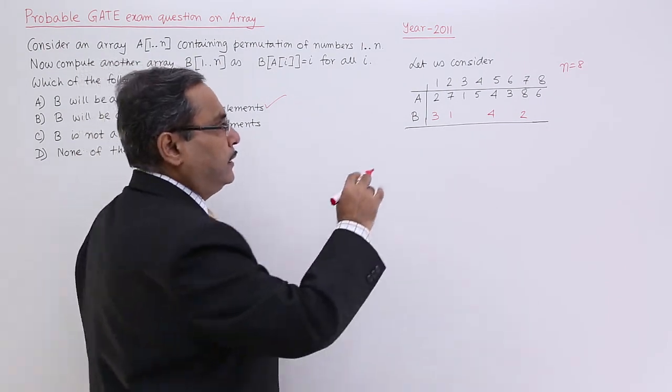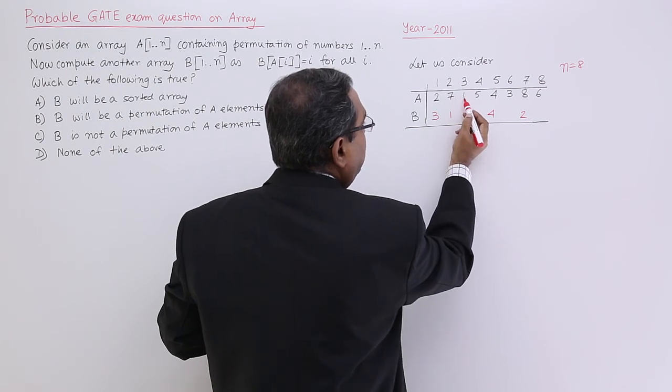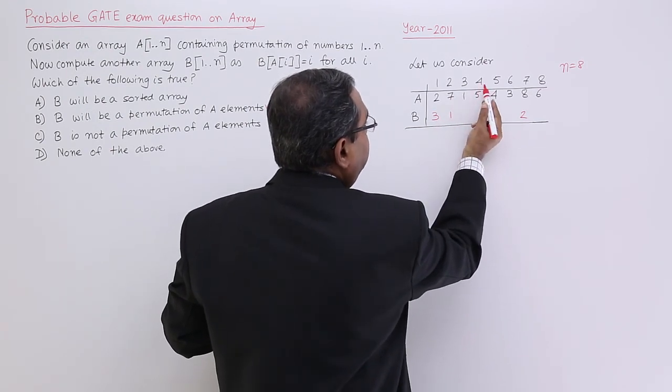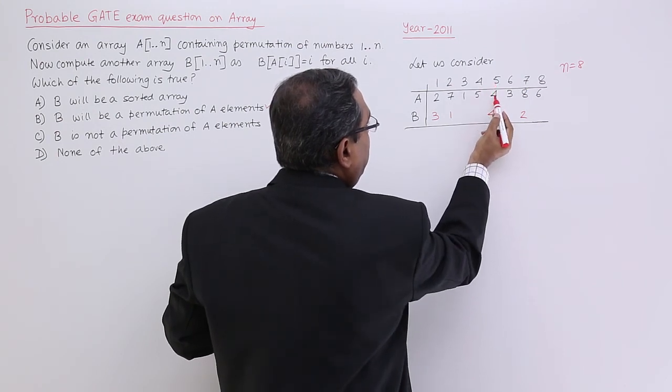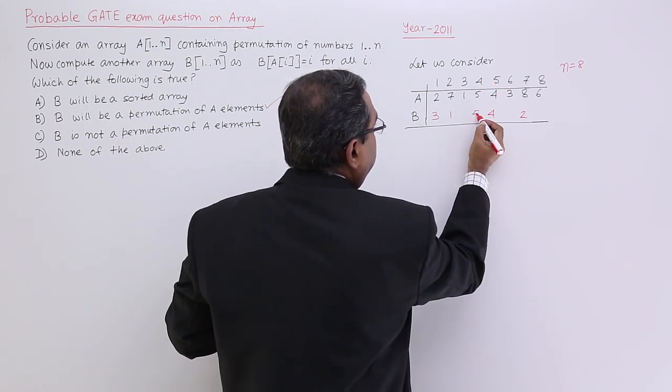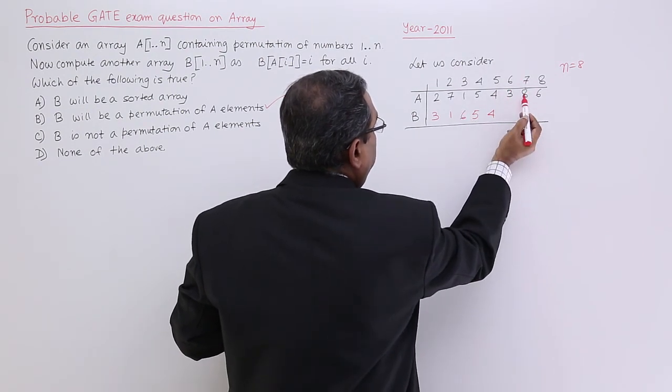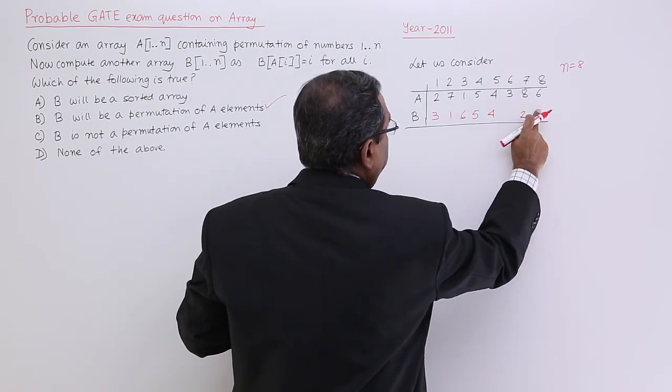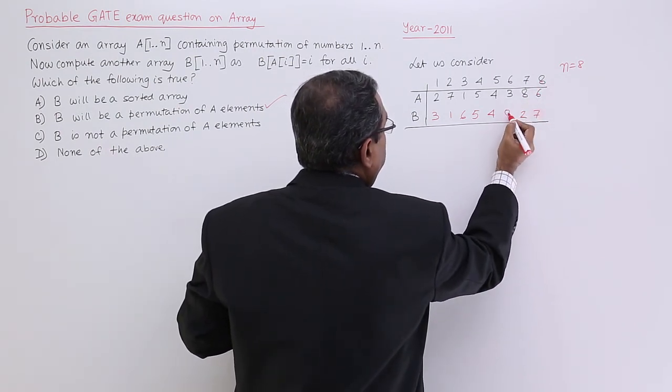Let us complete the fill up. 3 will be placed at the first, I have done. 4 will be placed at the fifth location, I have done. 5 will be placed at the fourth location. 6 will be placed at the third location. 7 will be placed at the eighth location. 8 will be placed at the sixth location.